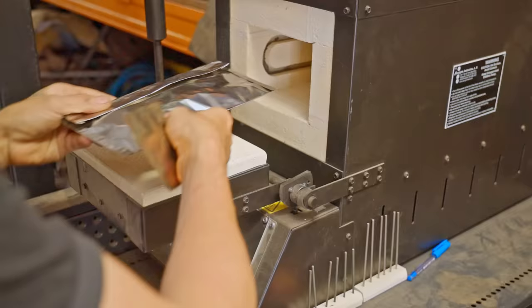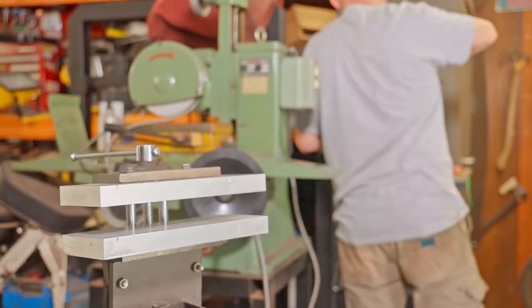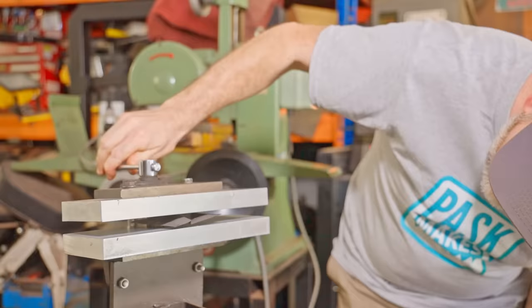After wrapping them we put them into the heat treat oven and set it to get to a thousand degrees C and then hold it there for 30 minutes. When it was ready we quenched them with aluminium quench plates to draw the heat out of them quickly and while I did the punch Luke was just off camera and he did the die with a second set of quench plates.